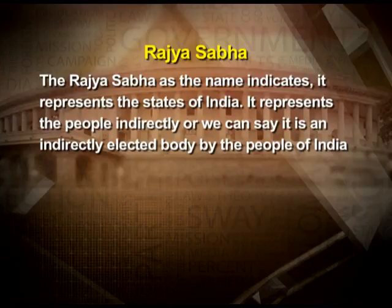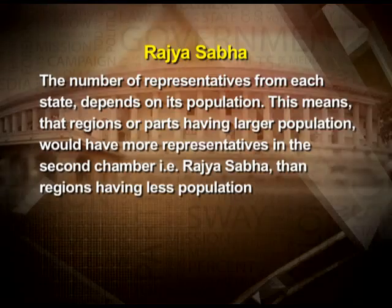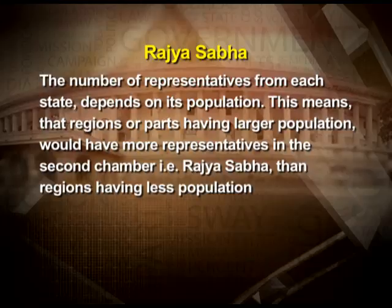Now we will know more about Rajya Sabha and Lok Sabha, the two houses of the parliament. Rajya Sabha, as the name indicates, represents the states of India. It represents the people indirectly — it is an indirectly elected body. Residents of a particular state elect members for the state legislative assembly, and those elected members of the state legislative assembly elect the members of Rajya Sabha. The different states have not been given equal representation; the number of representatives from each state depends on its population, so regions with larger populations have more representatives in Rajya Sabha.